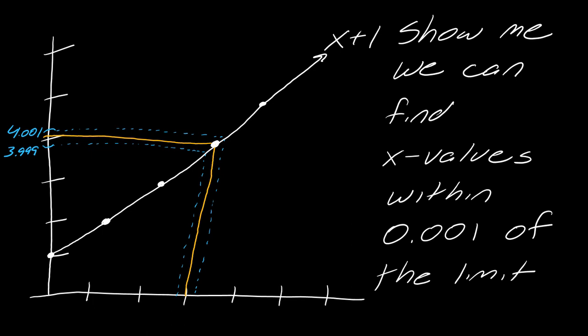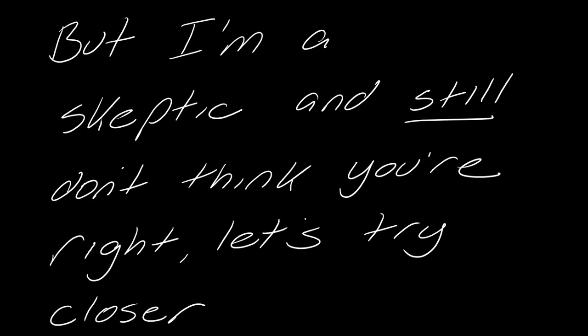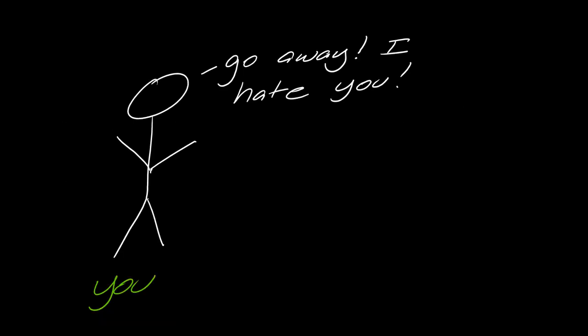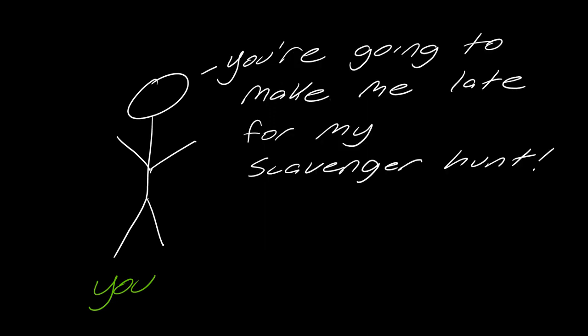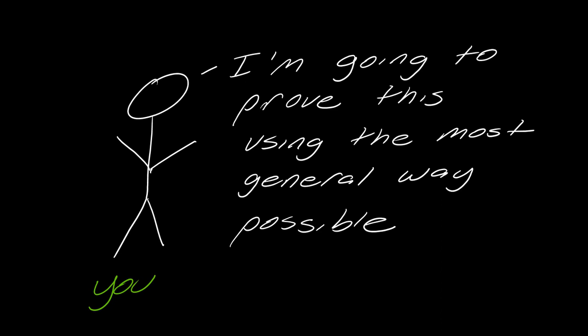I use the x-axis to help figure this out and back into those two x-values. We're in that desired region, so we probably found the right limit, because I can get closer and closer to it. I'm still a skeptic and still don't think you're right. You say, go away — I'll prove this the most general way possible. And so this leads us to where the precise definition of a limit is actually going to come in.